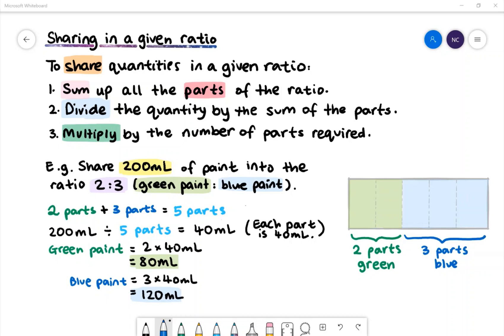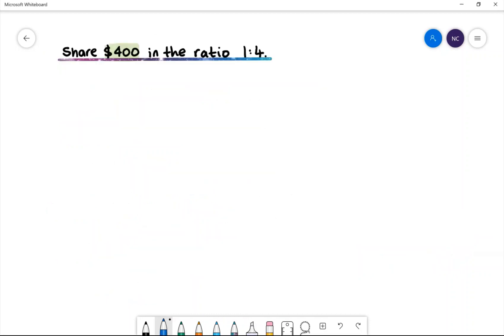Let's take a look at some examples. Share $400 in the ratio 1 to 4. First, we'll sum up the parts. The total amount of parts will equal to 1 part plus 4 parts. There are 5 parts altogether.